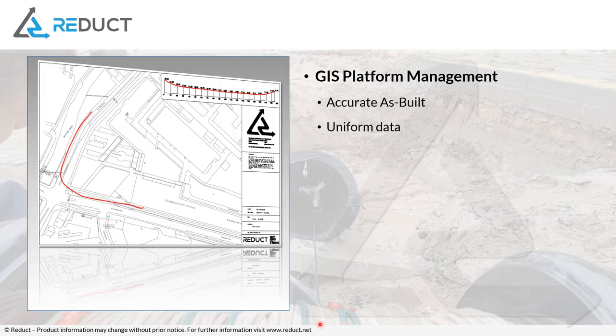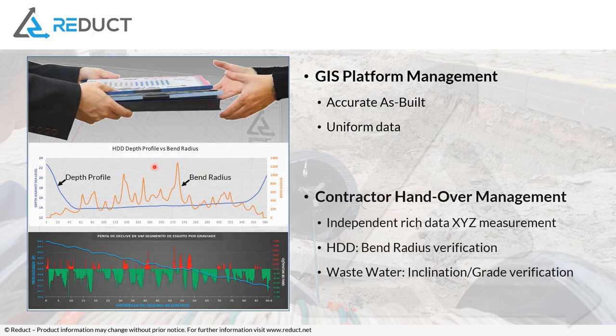So what do we use it for? First of all, GIS asset management — it creates an accurate as-built with uniform data. But more importantly, it is a perfect technology to verify the contractor's work and be a key component in contractor handover management. If you have a piece of network built by a contractor, it's not very healthy to receive an as-built from the contractor himself. It's better to have an independent technology decide whether the contractor's work is up to the specifications in the tender document.